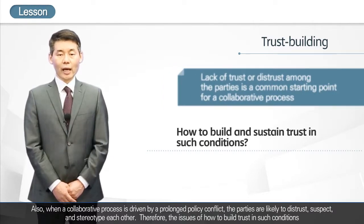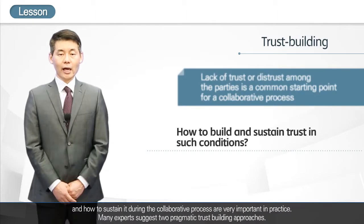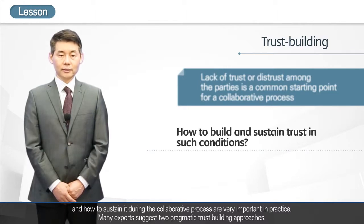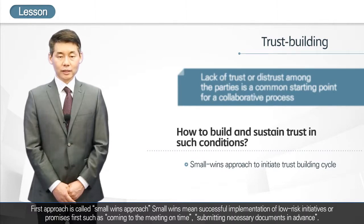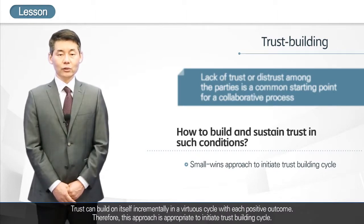Therefore, the issues of how to build trust in such conditions and how to sustain it during the collaborative process are very important in practice. Many experts suggest two pragmatic trust-building approaches. The first approach is called the small wins approach. Small wins means successful implementation of low-risk initiatives or promises first, such as coming to the meeting on time or submitting necessary documents in advance. Trust can build on itself incrementally in a virtuous cycle with each positive outcome, making this approach appropriate to initiate the trust-building cycle.